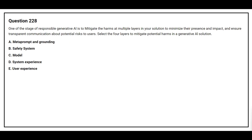Question 228: One of the states of responsible generative AI is to mitigate harms at multiple layers in your solution, to minimize your presence and impact, and ensure transparent communication about potential risks to users. Select the four layers to mitigate potential harms in a generative AI solution: Option A: Meta prompt and grounding. Option B: Safety system. Option C: Model. Option D: System experience. Option E: User experience.